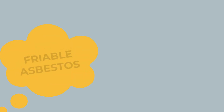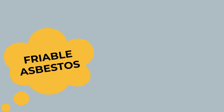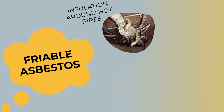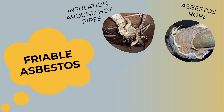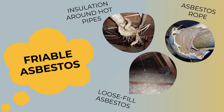Examples of common friable asbestos products include insulation around hot water pipes, asbestos rope, and loose fill asbestos like Mr. Fluffy insulation.